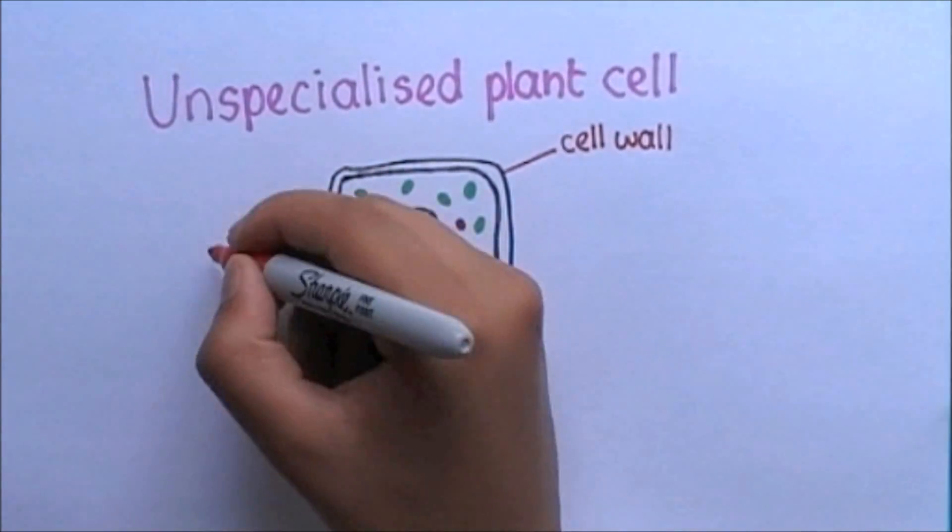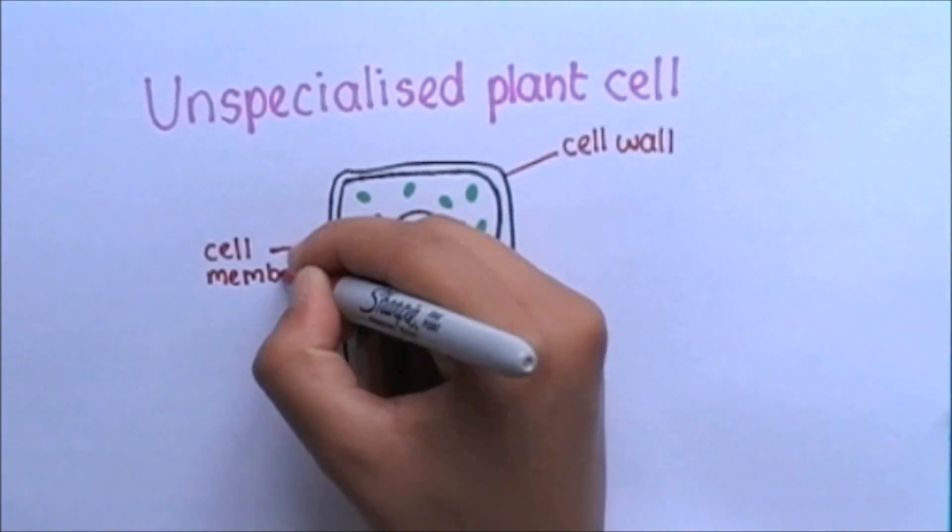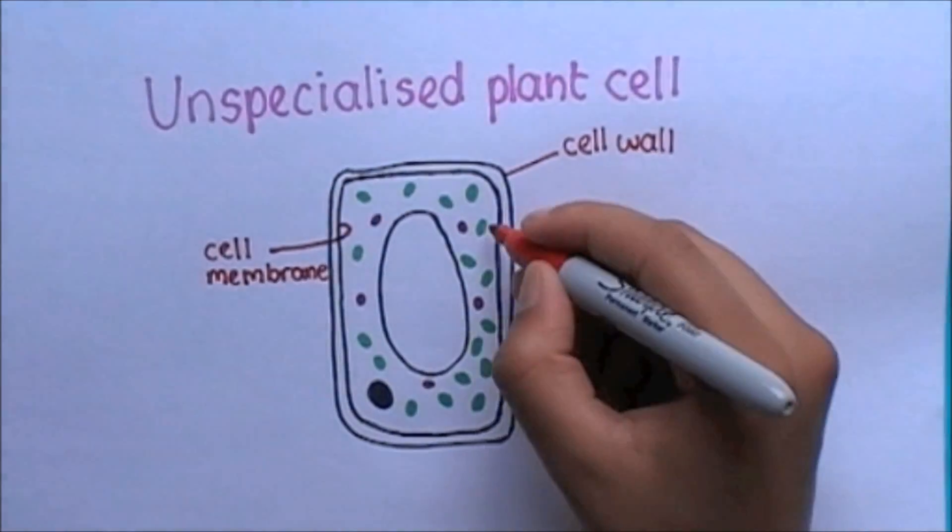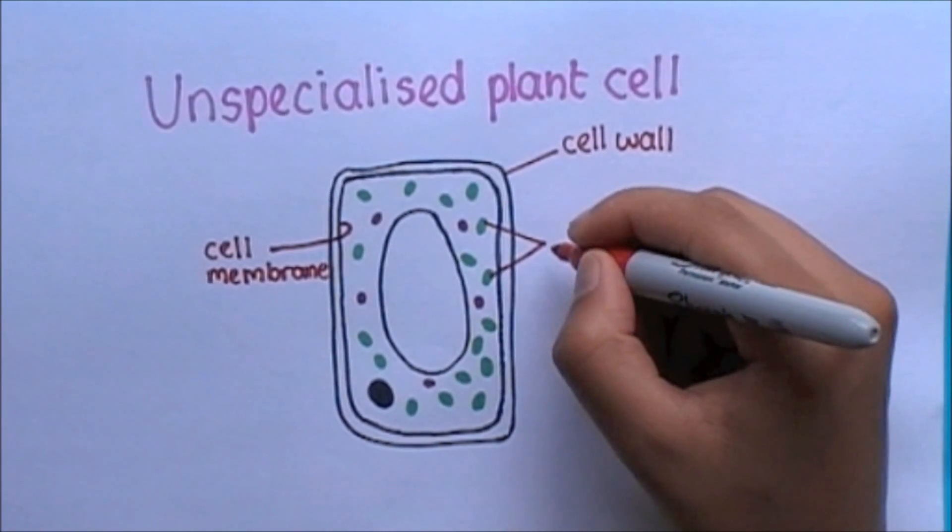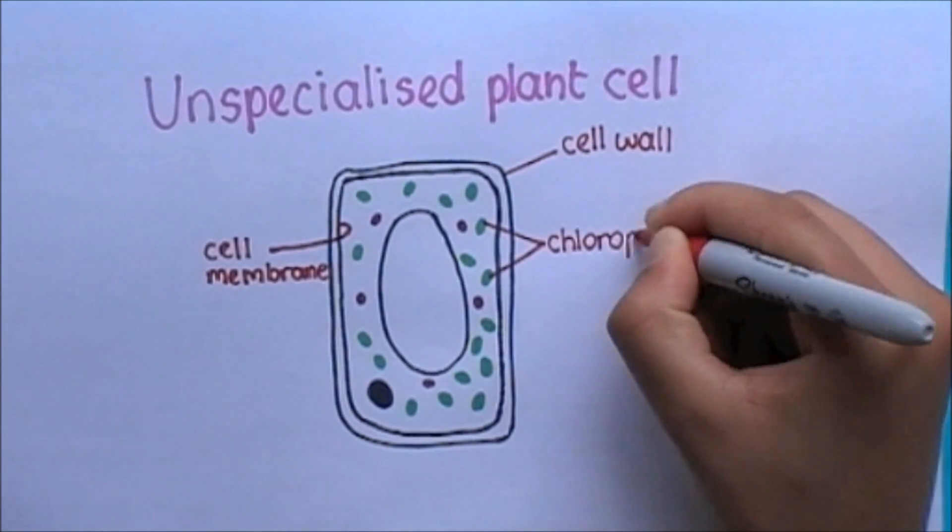This next structure is the cell membrane, as we have seen before. This is then followed by chloroplasts, which is a feature common to many, but not all, plants.